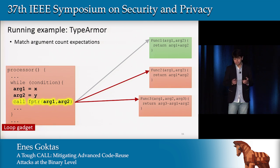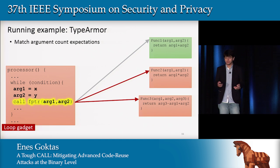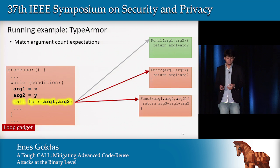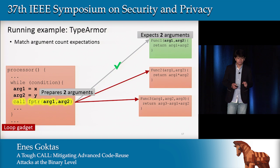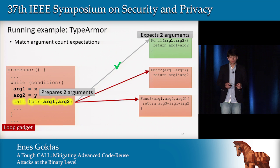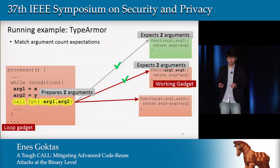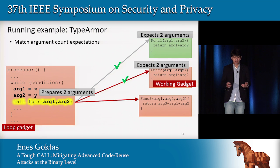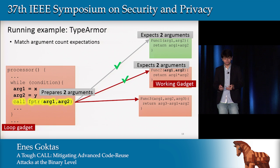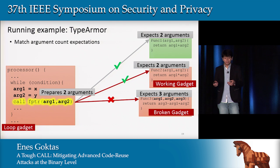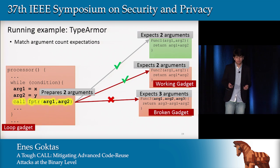Once we have the information, we match the call sites and the functions, and depending on the types, we either allow or disallow the link. For example, at this indirect call site, TypeArmor determines that it prepares two arguments. At function one, it determines that it also expects two arguments — TypeArmor would allow this link. The same applies for function two, which also expects two arguments, so the link is allowed. However, at function three, it determines that it expects three arguments, and as a result TypeArmor disallows this indirect call to go to function three because the matching didn't succeed.